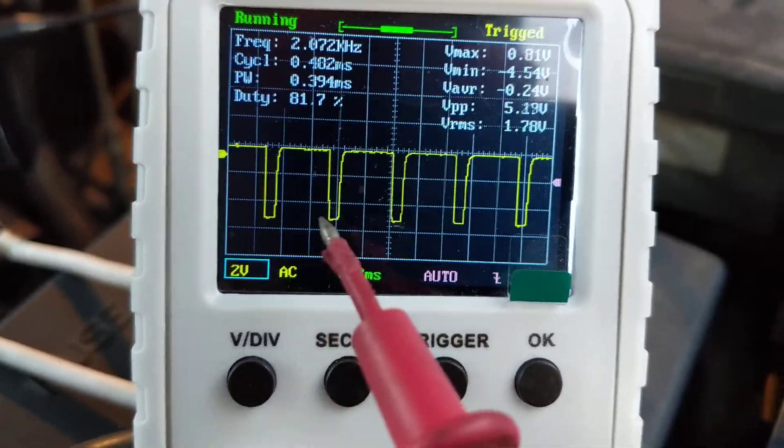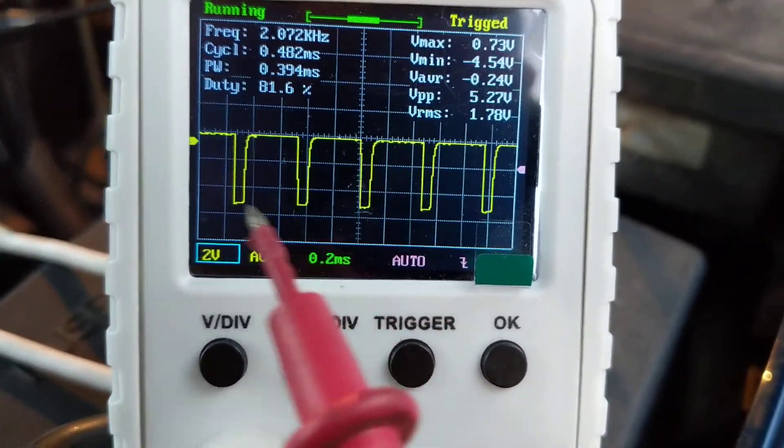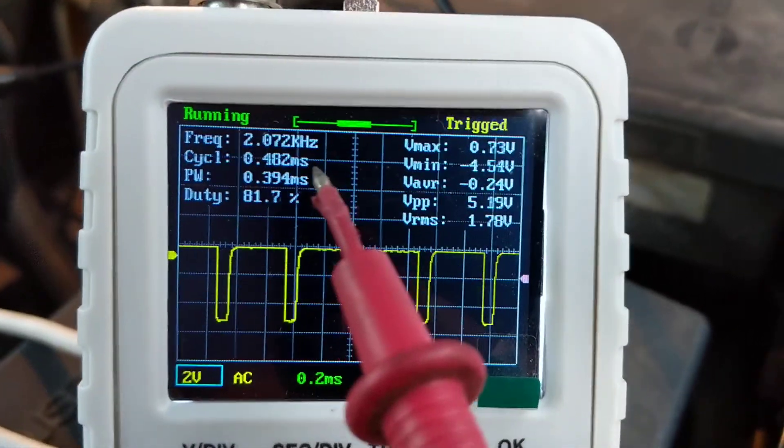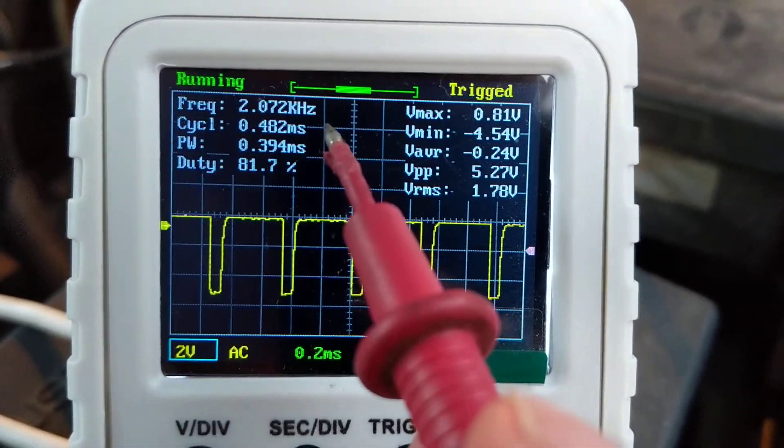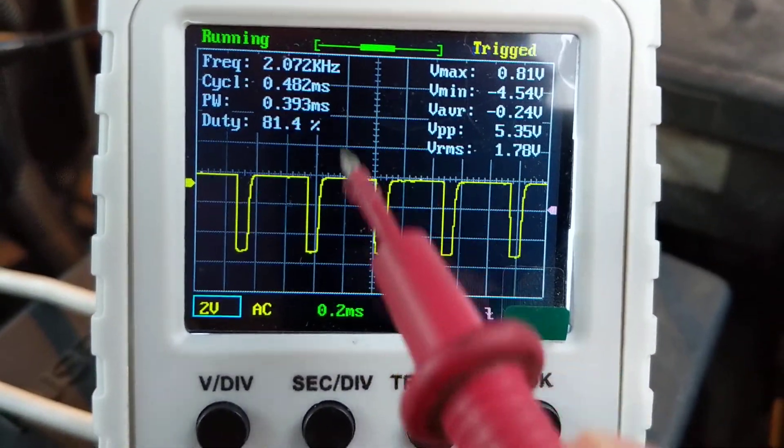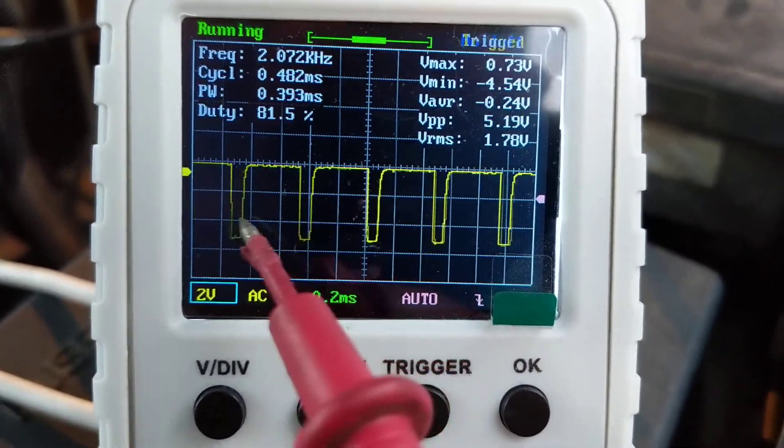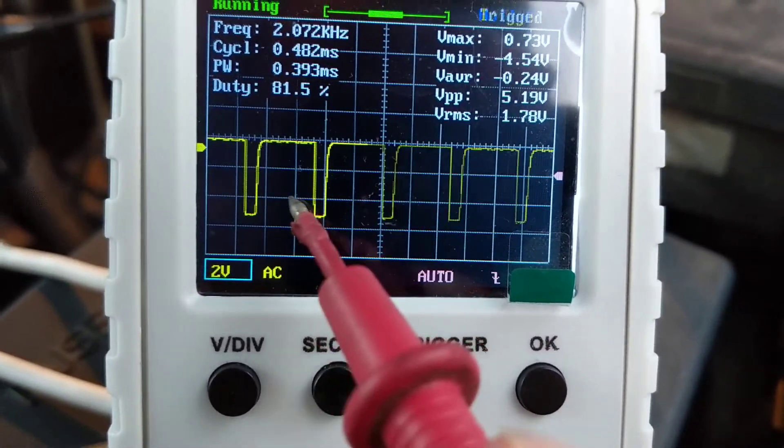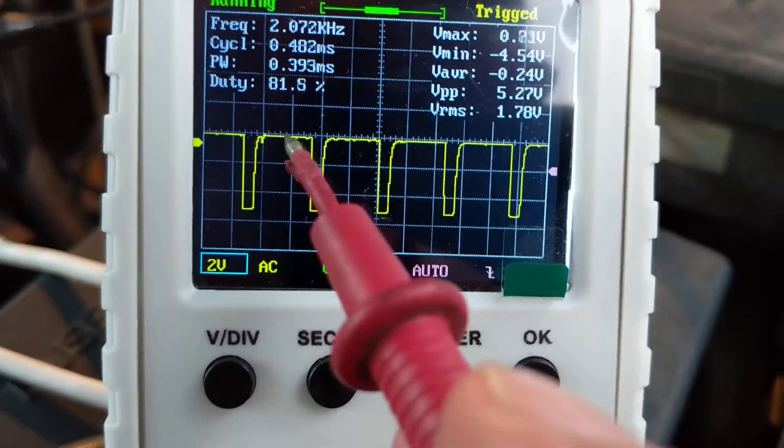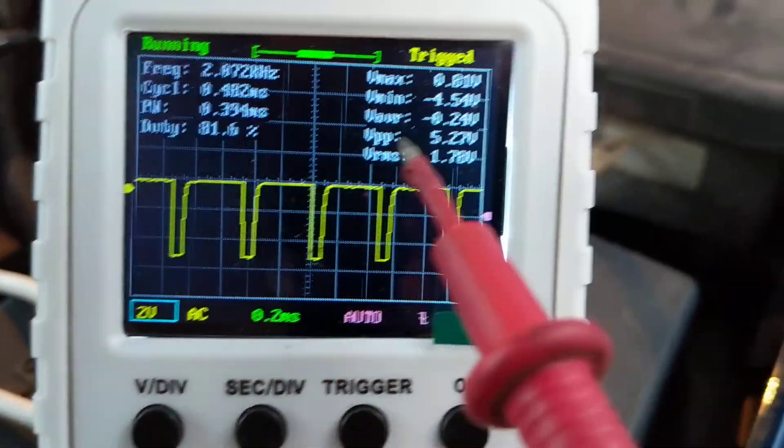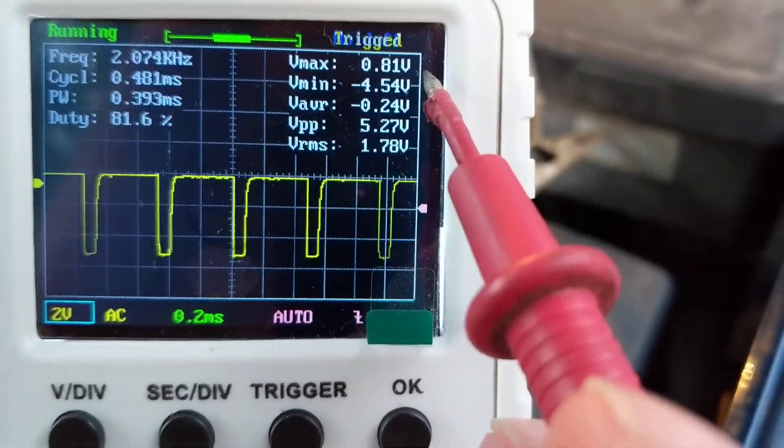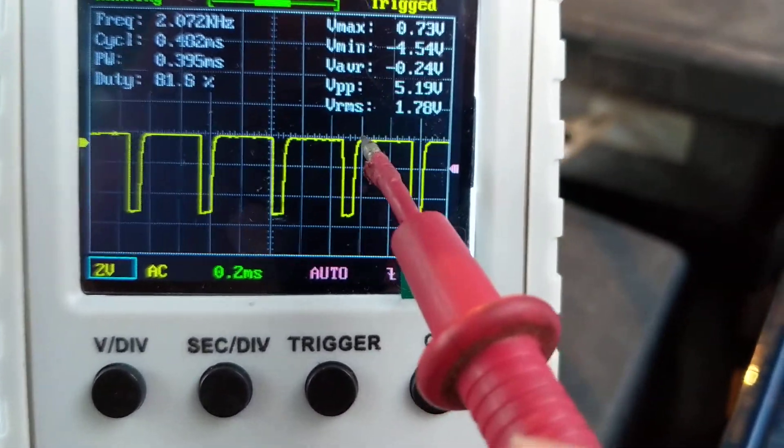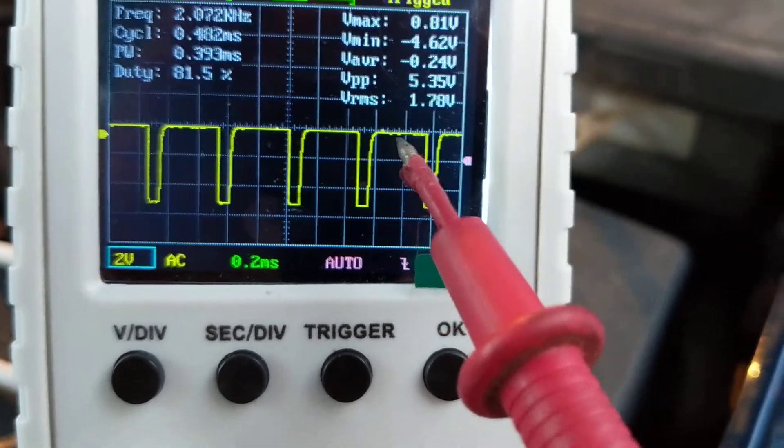This is frequency, the period, and this is the peak to peak. The frequency is around two kilohertz. This pulse is approximately 81 percent. If there would be even, it would be 50 percent. They're not. Now the volts maximum and all these volts peak to peak means from here to here they should measure about five volts.